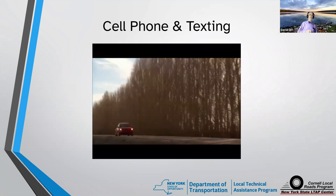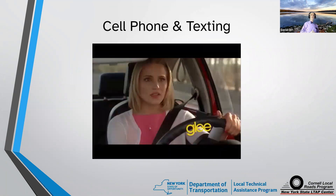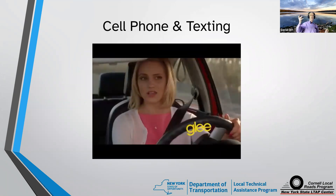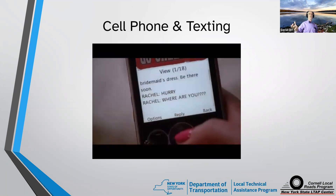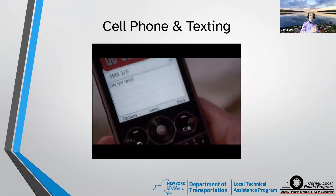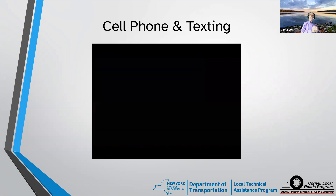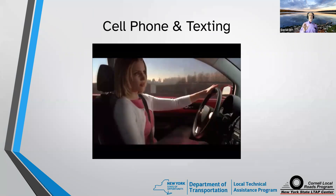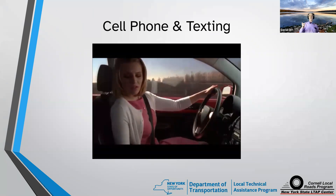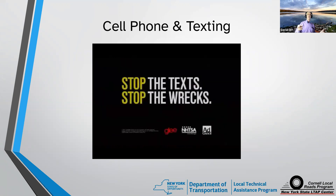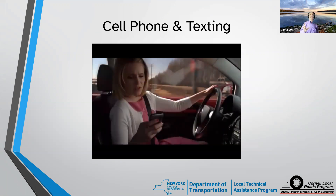One thing we don't think about enough — and this is part of a PSA from the people who did the TV show Glee — is cell phones. If you don't put that cell phone down and you're texting, you add five seconds to your reaction time. Think about that: five seconds. If you're traveling at 30 miles an hour, that's about 45 feet per second. You're adding five seconds to your reaction time, so we need to eliminate distractions and concentrate on the driving task. Intersections are a serious place to worry about this.